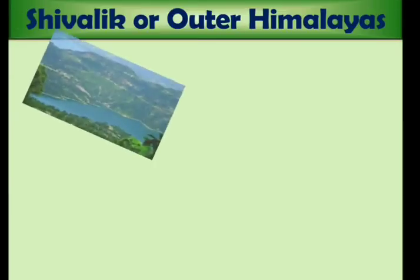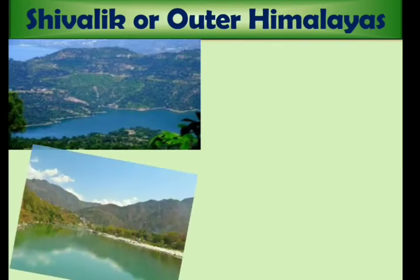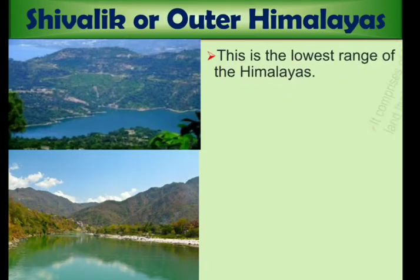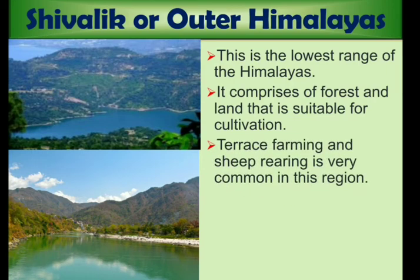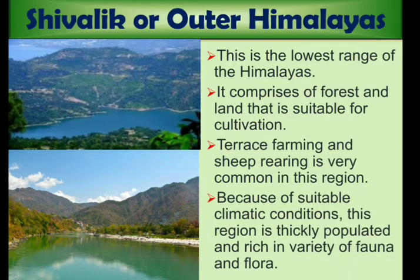Shivalik, or the Outer Himalayas, is the lowest range of the Himalayas. It comprises forest and land that is suitable for cultivation. Terrace farming and sheep rearing are very common in this region. Because of suitable climatic conditions, this region is thickly populated and rich in variety of fauna and flora.